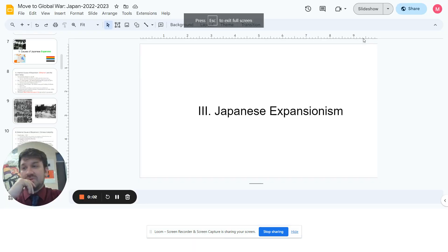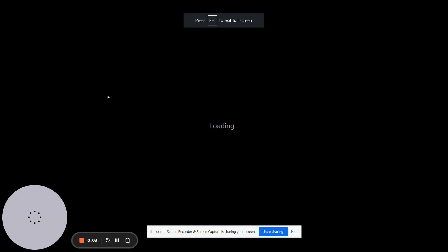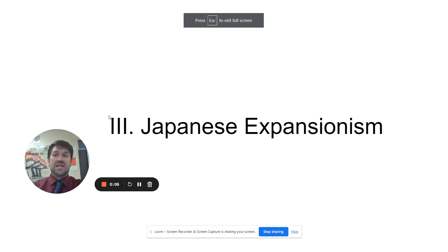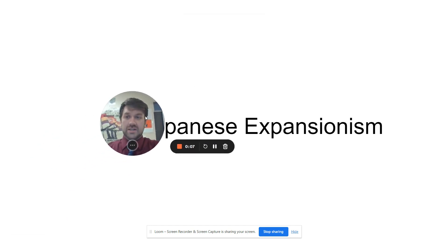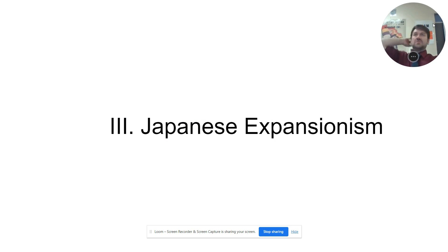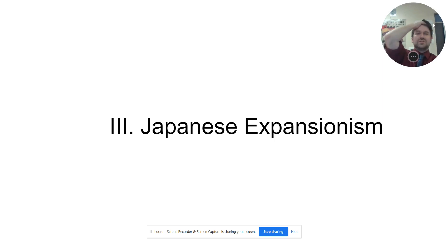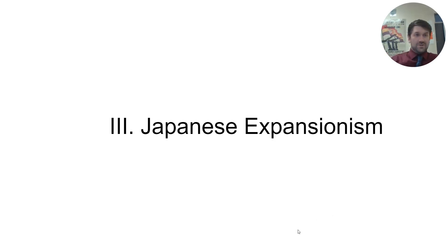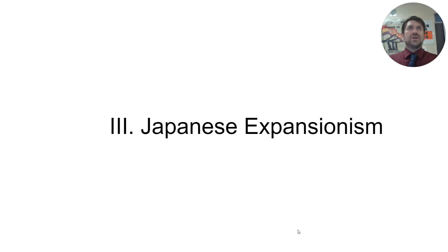Hello. So we're going to be talking about two very specific events of Japanese expansion during the period after World War One. They're kind of the ones that they focus on — there are some other examples, but these are really the most important ones. They kind of lead Japan to align further with the Axis powers and bring the world to war.